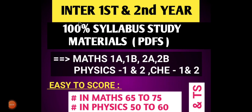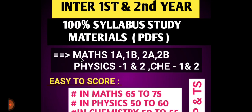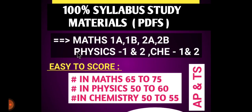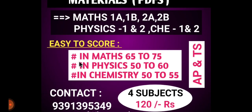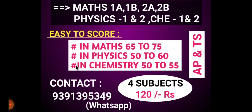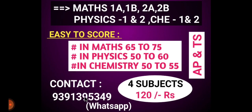Students, just one minute — we have intermediate first and second year 100% study materials in PDF form: Maths 1A, 1B, 2A, 2B, Physics 1st and 2nd year, Chemistry 1st and 2nd year. Expected score benefits: Maths 65–75, Physics 50–60, Chemistry 50–55. For 4 subjects, the cost is 120 rupees. Contact us for AP and TS students.